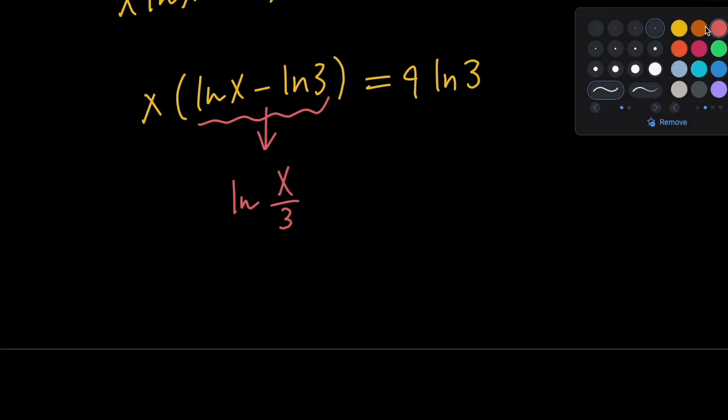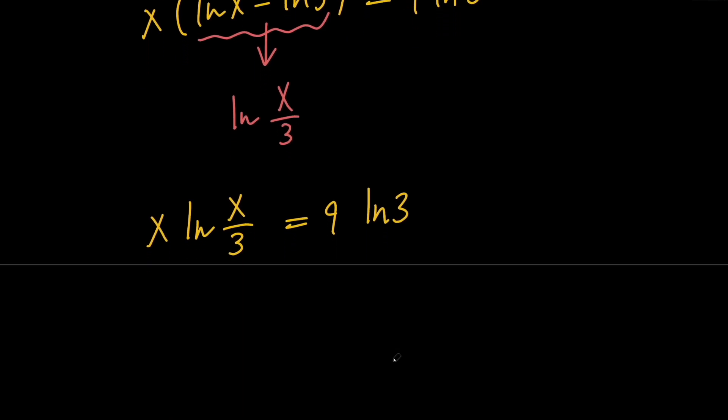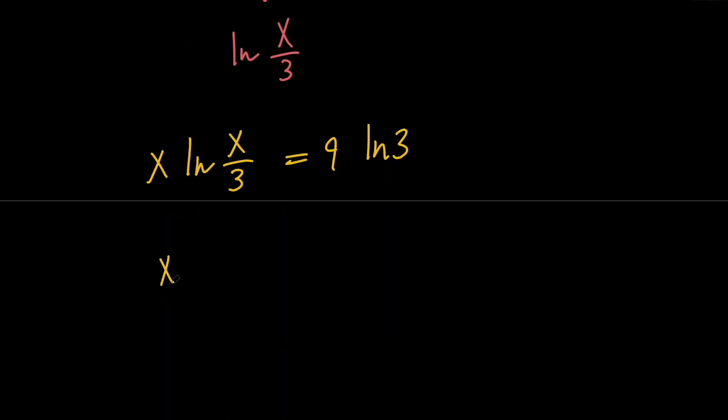So we have x times ln of x over 3 equals 9 times ln 3. Next, let's go ahead and divide both sides by 3 to get x over 3 times ln of x over 3 equals 3 times ln 3.